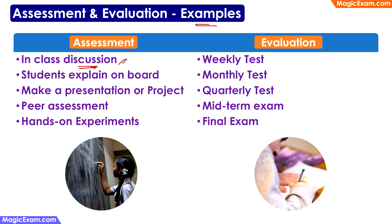Assessment can also be done by calling students to explain something on the board — this tells you whether students have knowledge on the topic, their confidence level, and whether they are able to explain their point of view. Or assessment can be done through a presentation or project — how well they present and explain the concepts, and through projects you can also see how well they cooperate with each other. Assessment can be done through peer assessment, where you ask children to assess each other. And hands-on experiments test whether children have just memorized something or really know how to do it.